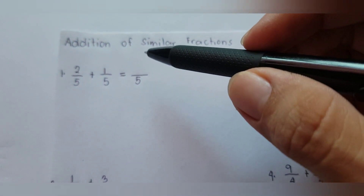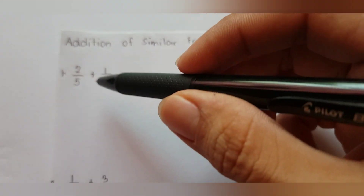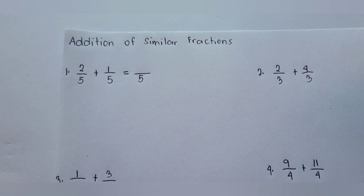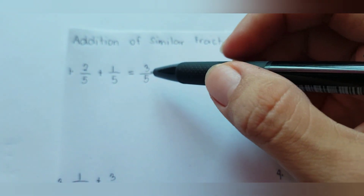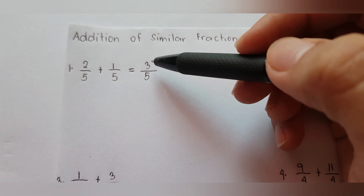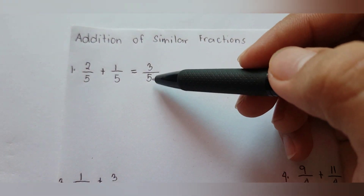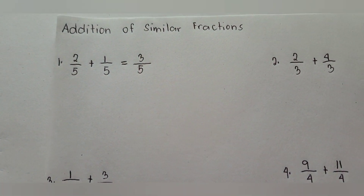Similar fractions are fractions whose denominators are the same. For the numerator, just add directly: two plus one equals three. So the resulting sum of two-fifths plus one-fifths is three over five, or three-fifths. Since three-fifths cannot be simplified further, three-fifths is our final answer.